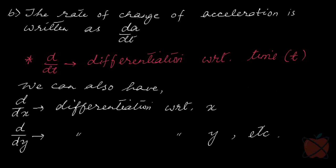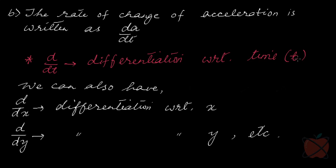We can also have the rate of change of acceleration, written as dA/dt. Now, this term d/dt — it is not d divided by dt. It is actually one term. You cannot cancel out d and d and say this is 1/t. That is not algebra here. So d/dt is one term meaning differentiation with respect to time. You can also have d/dx meaning differentiation with respect to x, and d/dy meaning differentiation with respect to y, and so on.